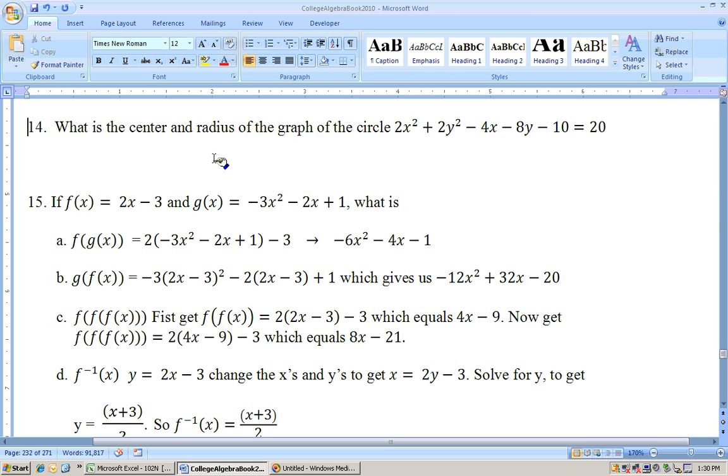Okay, problem 14 says, what is the center and radius of the graph of the circle: 2x² + 2y² - 4x - 8y - 10 = 20? You could do this by completing the square, but a much easier way is to go to the conic sheet.